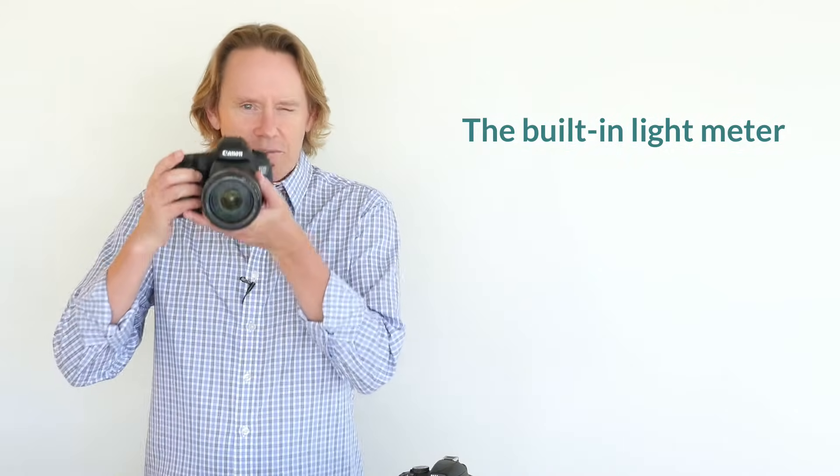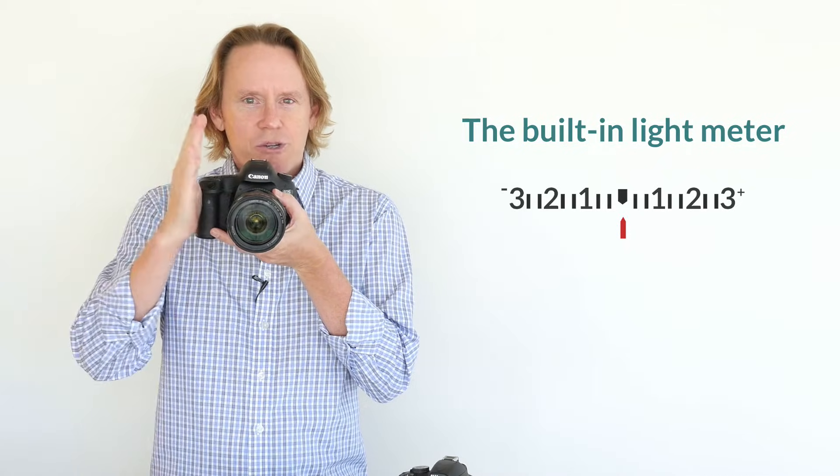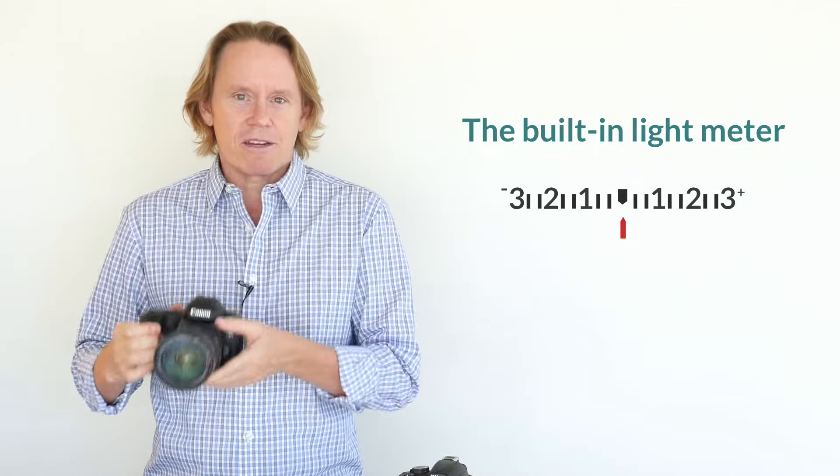When you look through the viewfinder of most DSLR cameras, there's a little meter at the bottom that gives you an exposure reading. That is your camera's built-in light meter. On most cameras, the light meter is represented by a little graph in the viewfinder, like this, and the current exposure value is indicated by a little arrow or pointer of some kind.